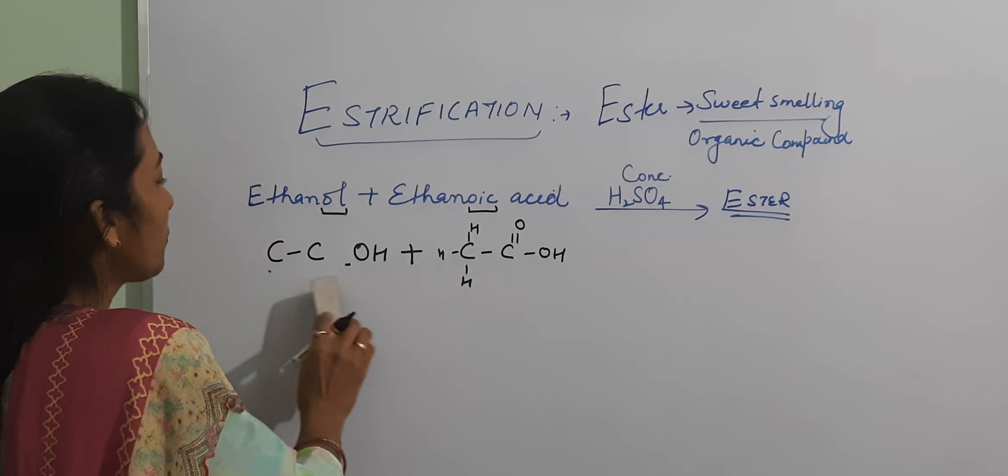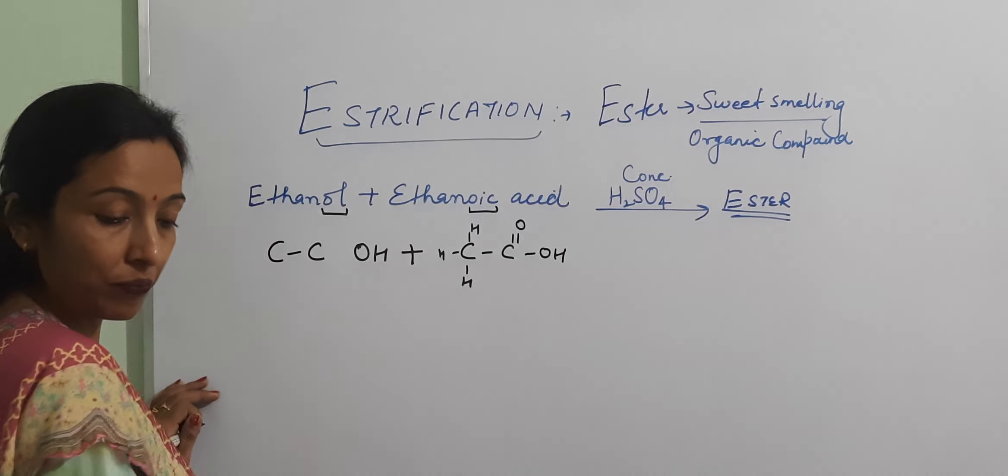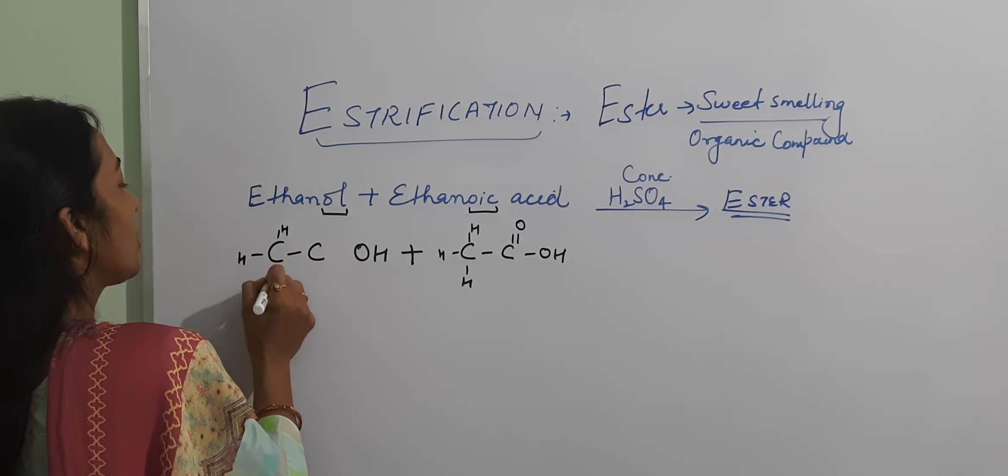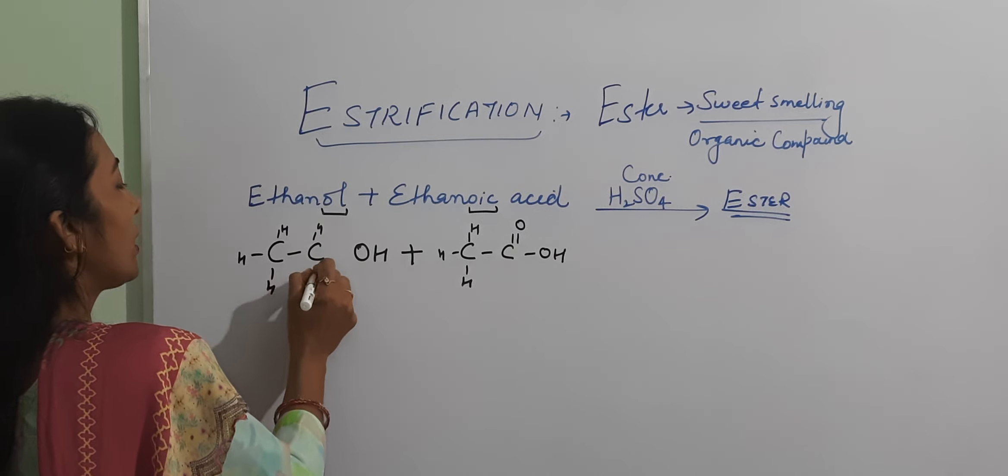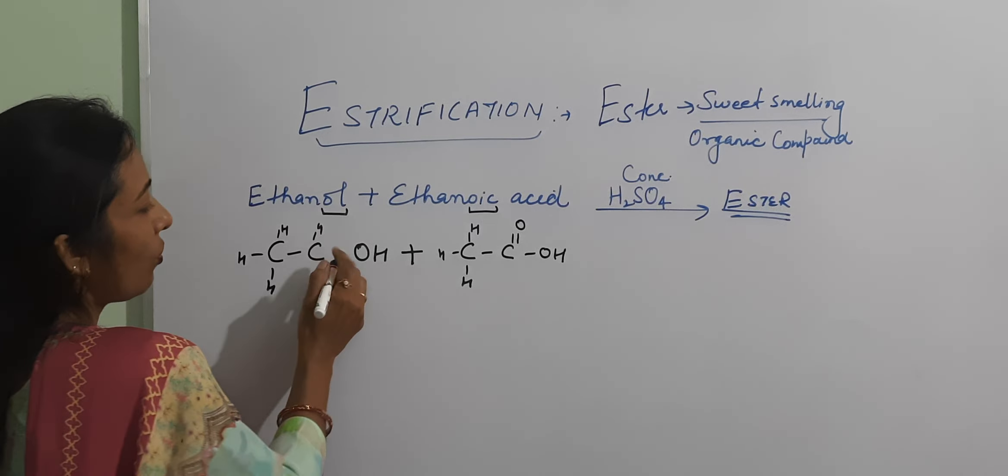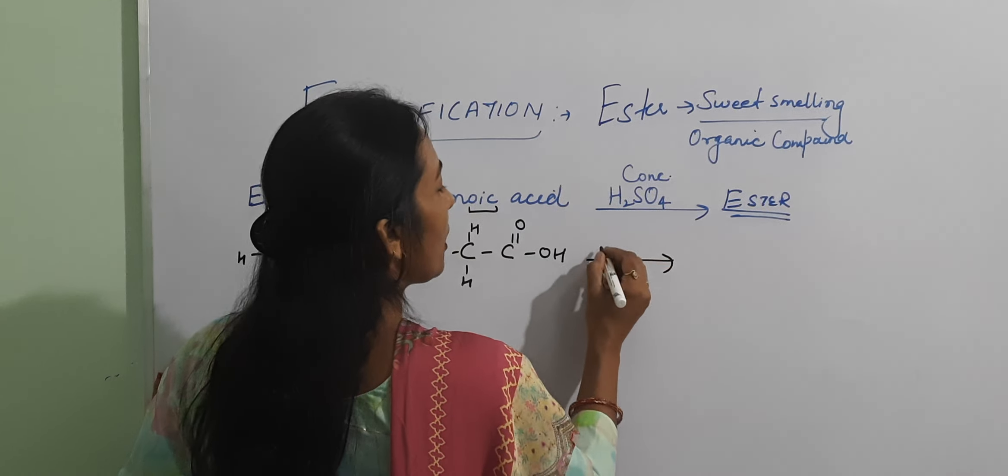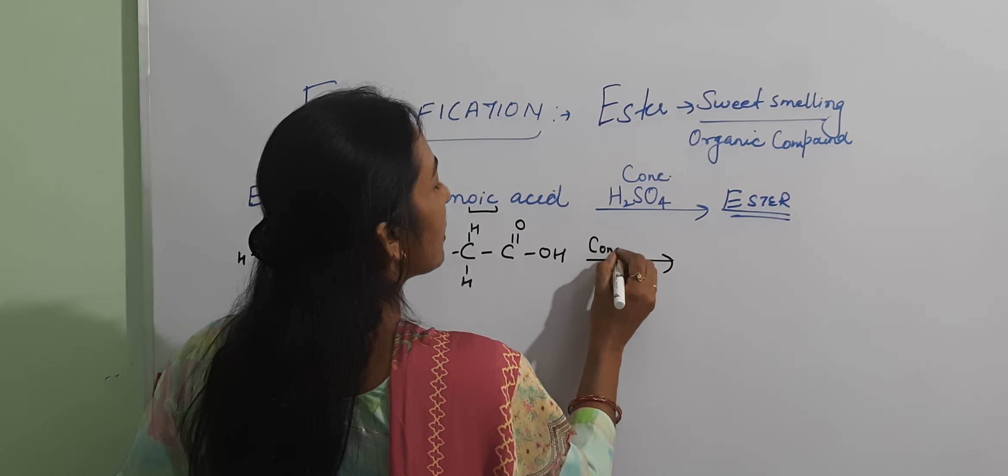Now we can also write it in expanded form. That is H, H, H, H and H. This is our ethanol, this is our ethanoic acid.